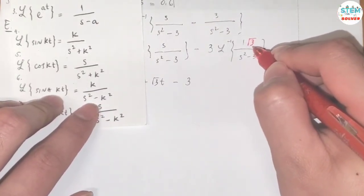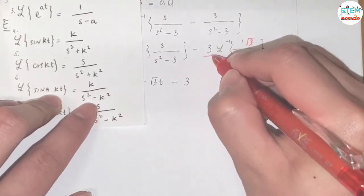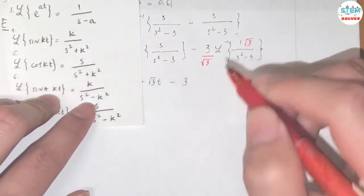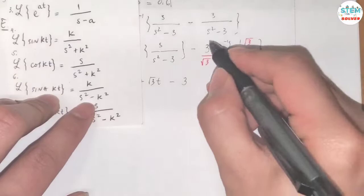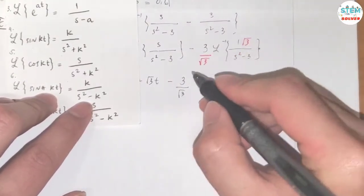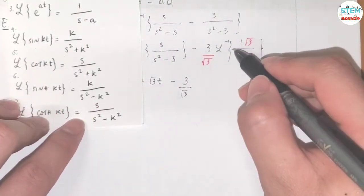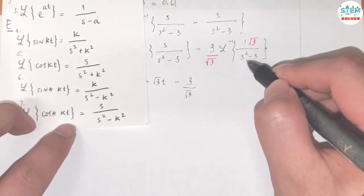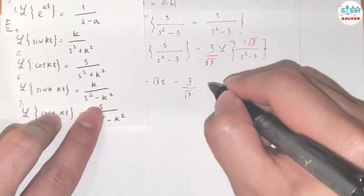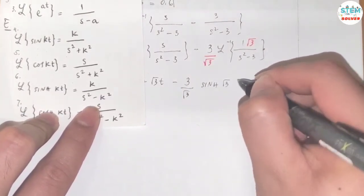So initially, I don't have square root of 3. So when I put it here, I have to divide by square root of 3 to compensate. So for this one, I have 3 over square root of 3 times - the inverse of L where k is square root of 3 over s squared minus 3 is equal to sine square root of 3 t.